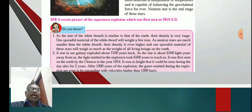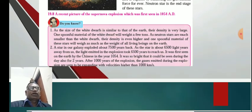As the size of the white dwarf is similar to that of the earth, their density is very large. One spoonful of material of the white dwarf will weigh a few tons. As neutron stars are much smaller than the white dwarf, the neutron star is small and the density is much more. A spoonful of this star will weigh as much as the weight of all living beings on the earth.